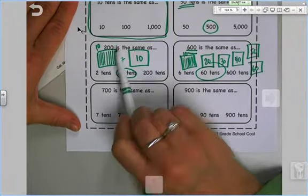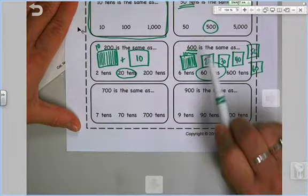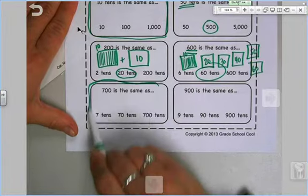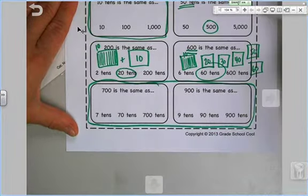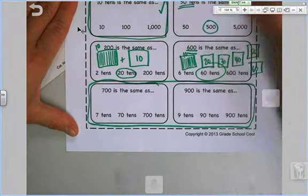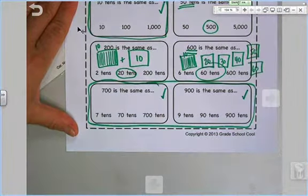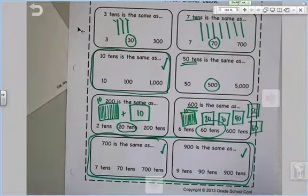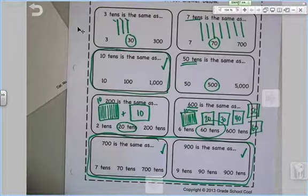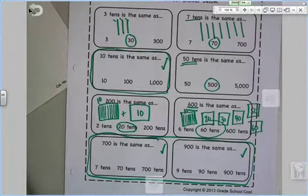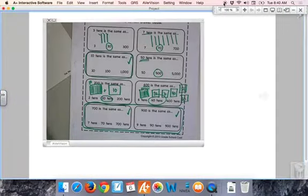So now that you know that 200 is the same as 20 tens and 600 is the same as 60 tens, these two, you are on your own. So I'll be checking this one, this one, and that one. Make sure your name is on it and turn it into the homework basket. If you are completed with both videos and both pages, great job. Give yourself a pat on the back. Way to go. Have a good day, guys. Later.